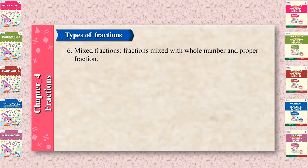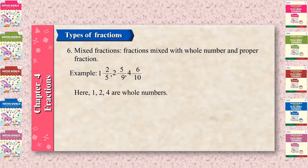Mixed fractions: fractions mixed with a whole number and a proper fraction. Example: 1 and 2 upon 5, 2 and 5 upon 9, 4 and 6 upon 10. Here, 1, 2, and 4 are whole numbers, and 2 upon 5, 5 upon 9, and 6 upon 10 are proper fractions.